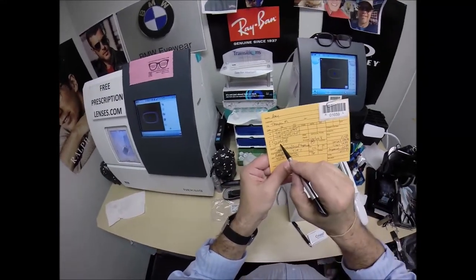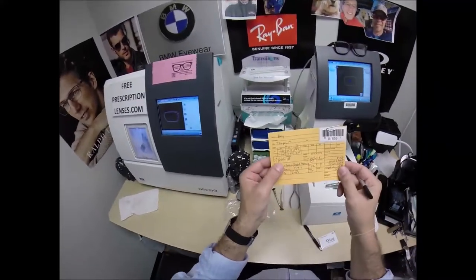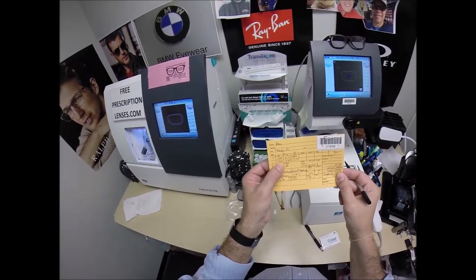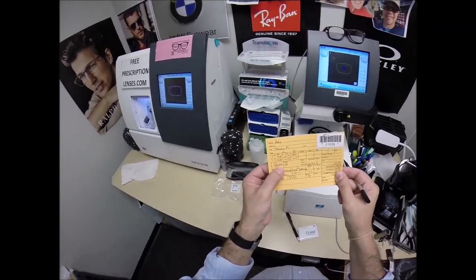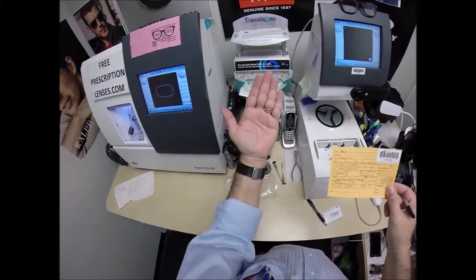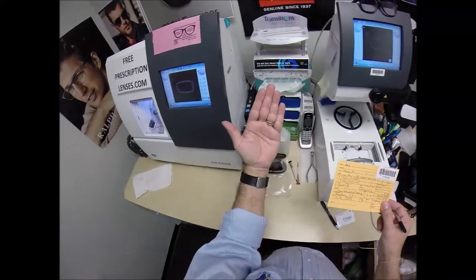Now, your bifocal strength is 225. It means the add. It means in addition to what's up top. So to find out your reading power, you add 225 to 4 and that would actually give you 175. So you naturally have one plus 175 sphere built into your lens for about right here.